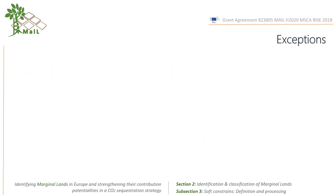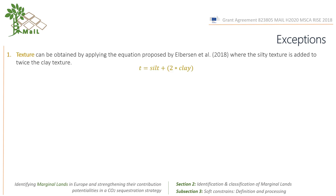In the processing of the soft indicators, there may be exceptions. For example, in the main project, some exceptions involved the preparation of a dataset before applying the workflow. The first exception is the soil texture indicator, which is obtained by applying the equation proposed by Elversen et al. 2018, where the silt and clay fractions are used to derive the texture.